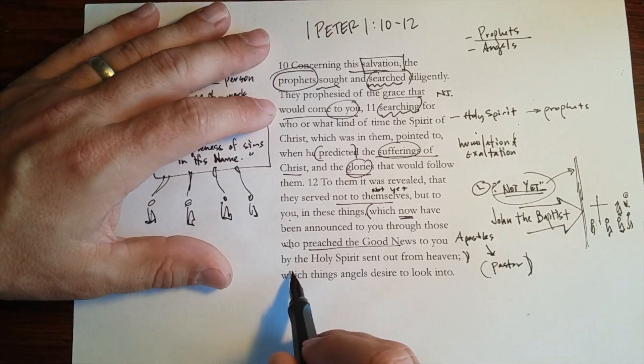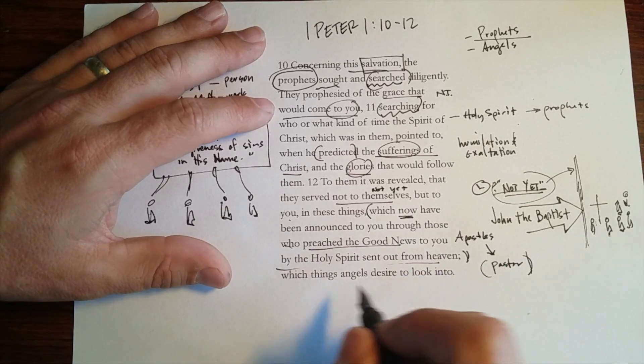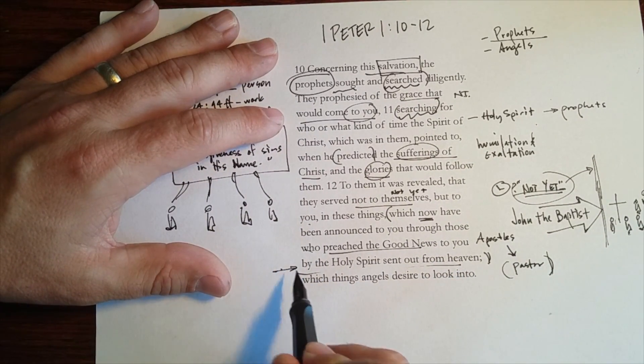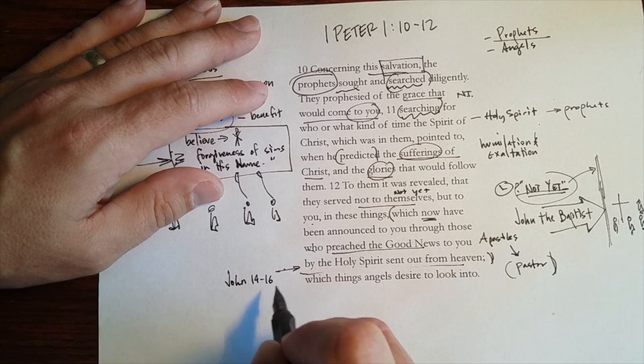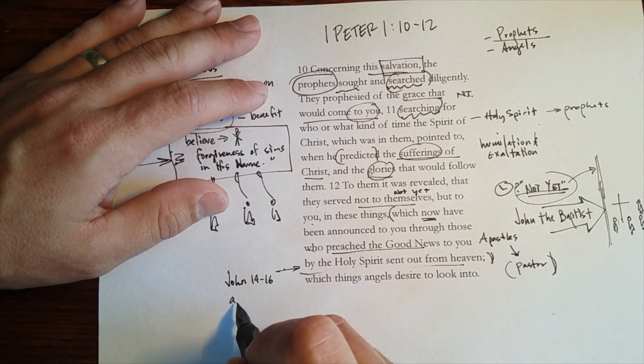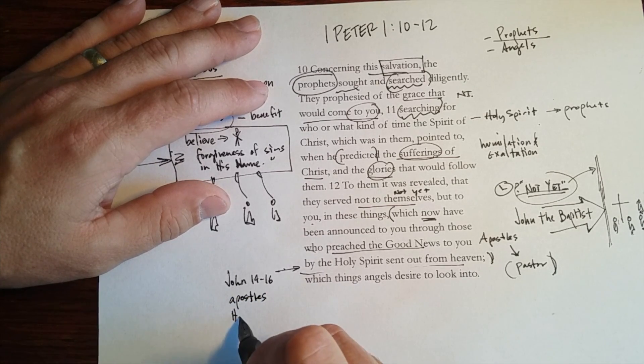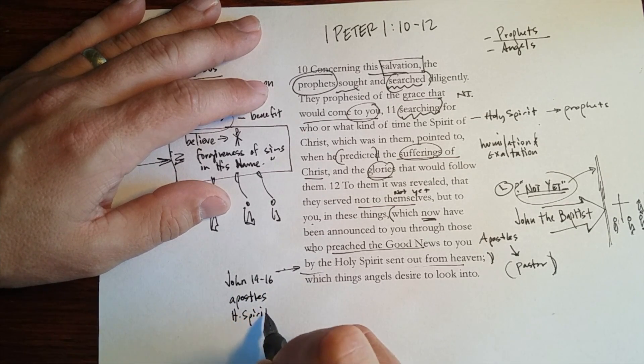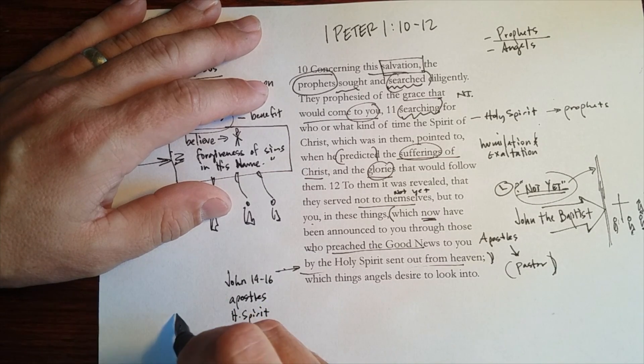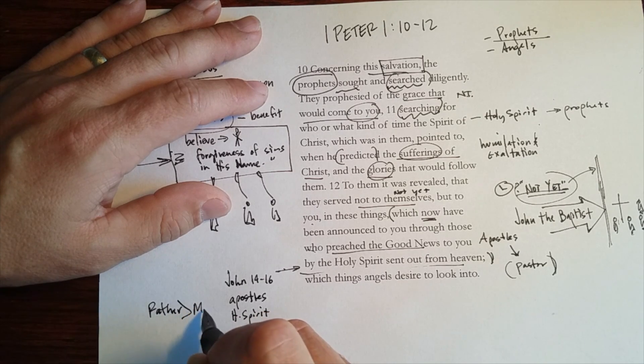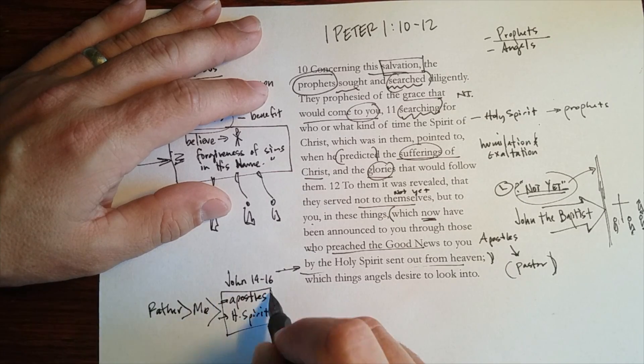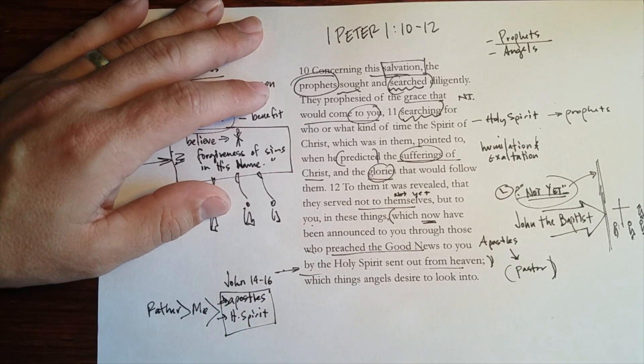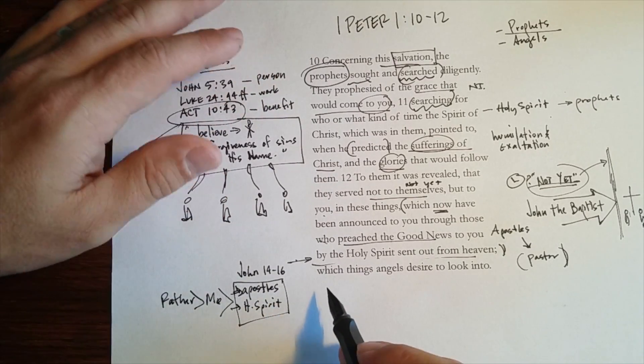Now notice that this is by the Holy Spirit sent out from heaven. This is an indication, a reminder of John chapter 14, 15, and 16, where Jesus sends out the apostles, and he sends out the Holy Spirit. And this great sending, Jesus says, as the Father sent me, so I also send you, and I send my Holy Spirit, so that Jesus has established the church in the preaching of the apostles and the gift of the Holy Spirit.